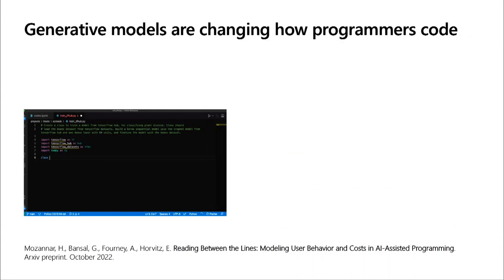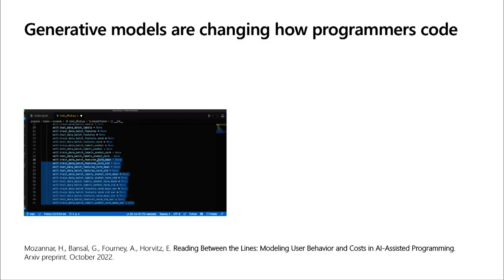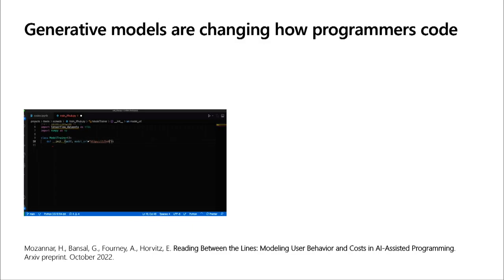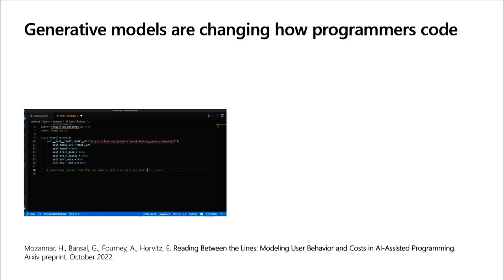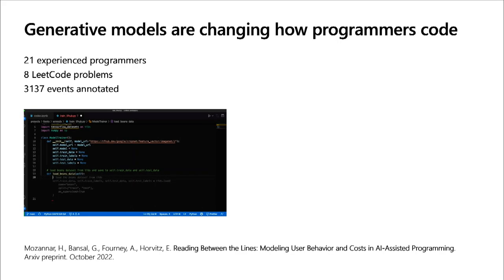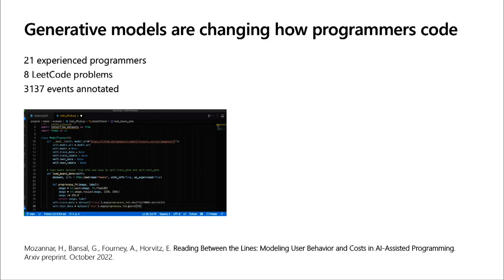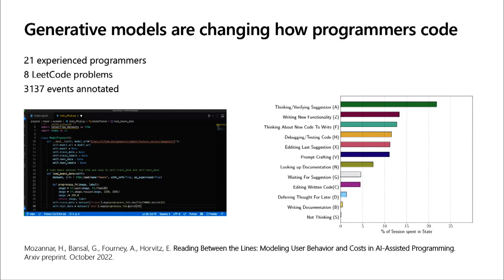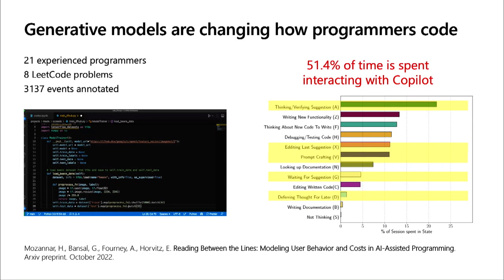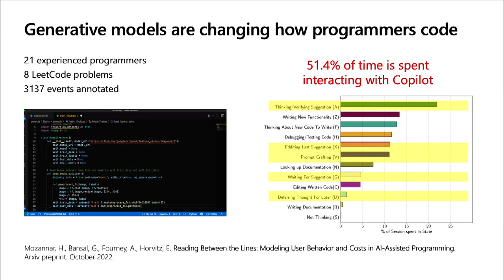You can see why this happens when you watch people program with generative models — they view a generation, iterate over their prompt, do back and forth, view suggestions. A study with 21 programmers completing 8 diverse LeetCode problems found 51% of people's time was spent interacting with these models: steering them in the right direction, verifying, editing code. This demonstrates a huge shift in the type of work people do when coding — now they spend a lot of time steering these models.